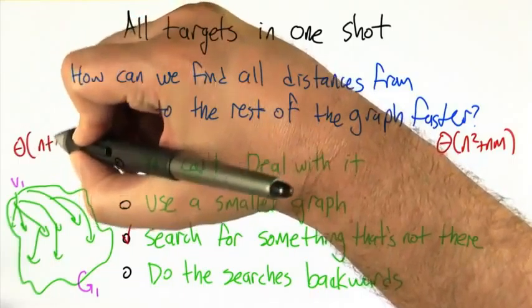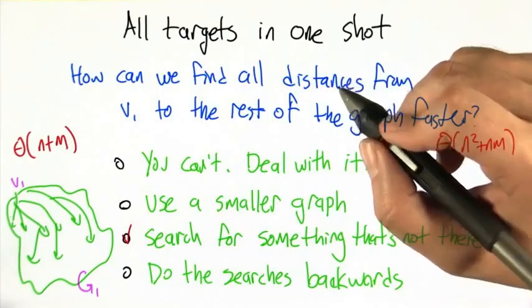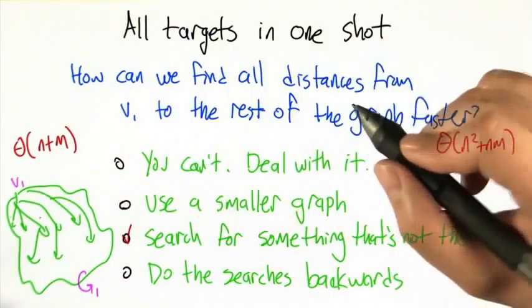So the running time here is just the time it takes to do a single search, and then you get the answer for all the nodes in the graph.